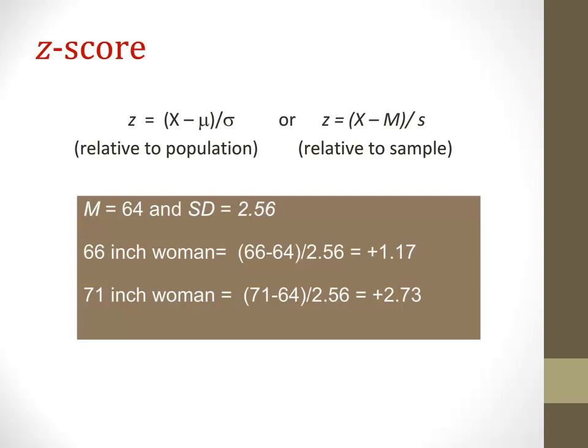Understanding z-scores can be helpful in many ways because they help us understand a person's position in a distribution. For example, an educator may want to understand a specific student's achievement score on multiple assignments. Examining z-scores for each assignment can inform the educator if a student is performing average, extremely high, or extremely low — and this can then inform their instruction. A z-score informs the position of one's score, which is different from standard deviation and mean, which describe the entire distribution.